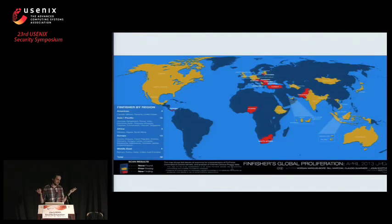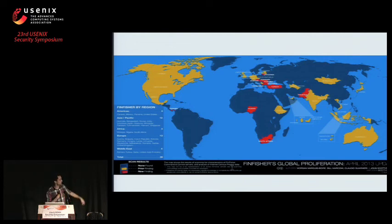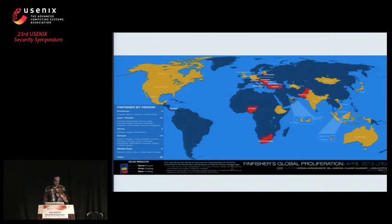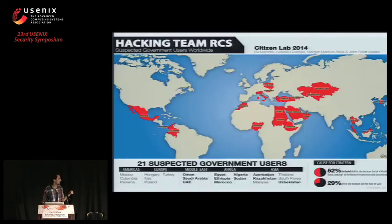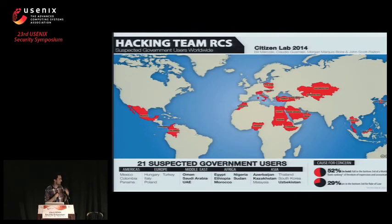We did global scans and found FinFisher servers in a number of interesting countries — countries in the Middle East, Turkmenistan, fairly repressive places. We also did the same thing for another type of spyware: Hacking Team's RCS spyware, which is a competitor to FinFisher's FinSpy product.